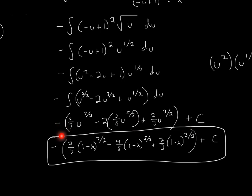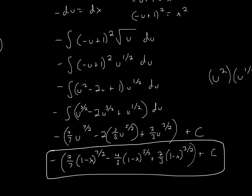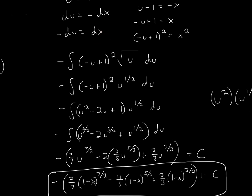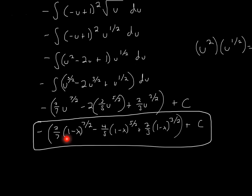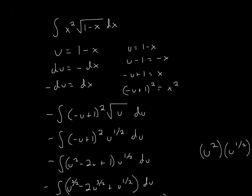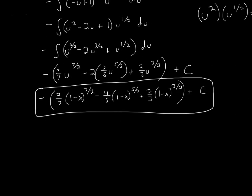Now remember, we can't keep the answer in terms of u because the original problem was in terms of x. So we plug in what we had for u, which was 1 minus x. The final answer is negative 2 over 7 times (1 minus x) to the 7/2, minus negative 4 over 5 times (1 minus x) to the 5/2, plus 2 over 3 times (1 minus x) to the 3/2, plus C.